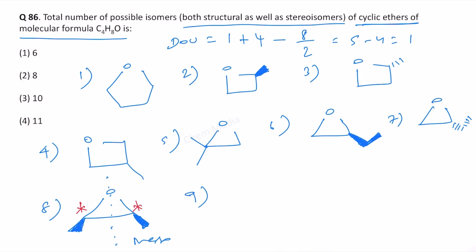And then other isomer is this one. Let's change the stereochemistry at one place. This is one isomer and then its corresponding enantiomer. Let's change the stereochemistry at both the places. So these two are enantiomers.